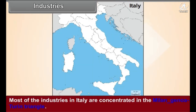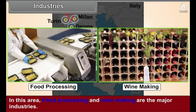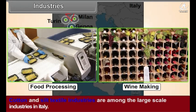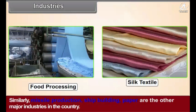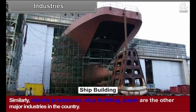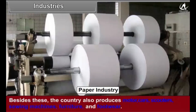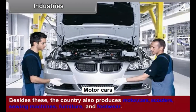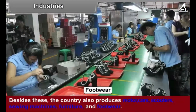Industries: Most of the industries in Italy are concentrated in the Milan-Genova-Turin triangle. In this area, food processing and winemaking are the major industries. Cotton and silk textile industries are among the large-scale industries in Italy. Similarly, missile production, shipbuilding, and paper are other major industries in the country. Besides these, the country also produces motor cars, scooters, sewing machines, furniture, and footwear.